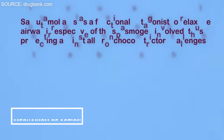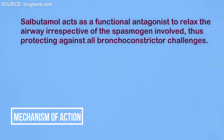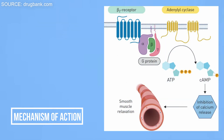The Mechanism of Action of Salbutamol. Salbutamol acts as a functional antagonist to relax the airway irrespective of the spasmogen involved, thus protecting against all bronchoconstrictor challenges. Salbutamol relaxes the smooth muscles of all airways from the trachea to the terminal bronchioles. Activation of beta-2 adrenergic receptors on airway smooth muscle leads to the activation of adenyl cyclase and to an increase in the intracellular concentration of cyclic AMP.